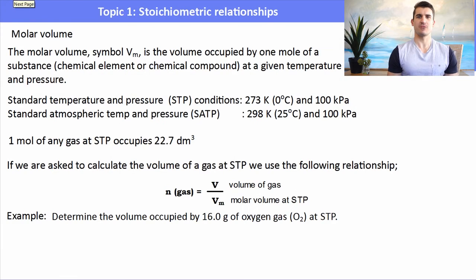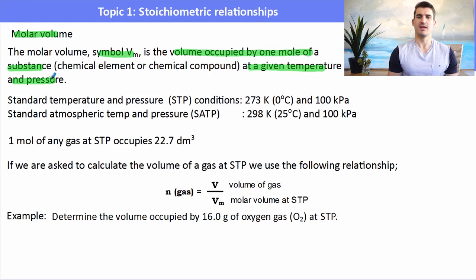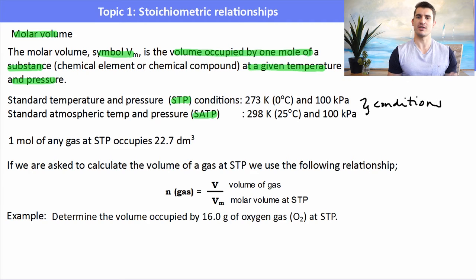This has been developed into what we call the molar volume, given the symbol Vm — the volume occupied by one mole of a substance at a given temperature and pressure. There are two particular conditions the IB wants you to know: standard temperature and pressure (STP) and standard atmospheric temperature and pressure (SATP). Both can be found in the data book. At STP we have 0°C and 100 kilopascals. For SATP it's 25°C and 100 kilopascals.